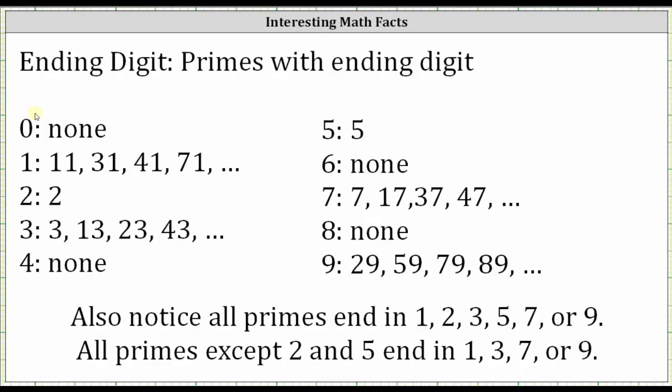Here I have listed out the possible ending digits, zero through nine. No primes end in zero. There are infinite number of primes that end in one. I've listed out the first four. There's only one prime that ends in two, the number two.